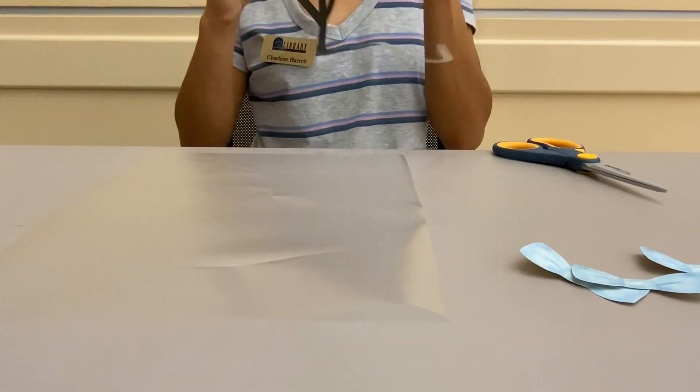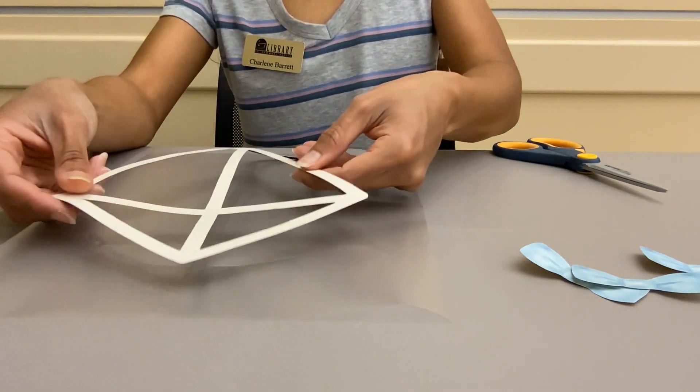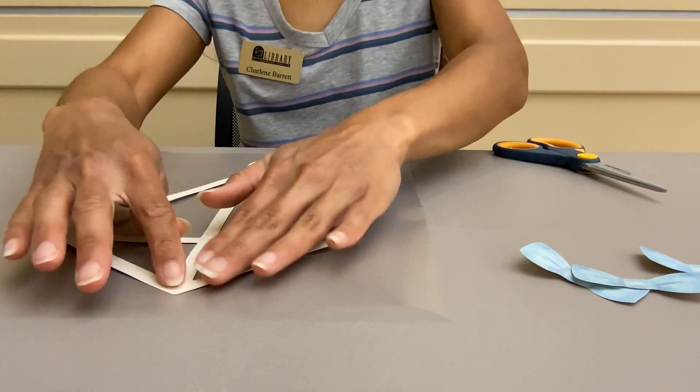And then you're going to take your kite outline and you're going to put it straight down with the black side down and the white side up.